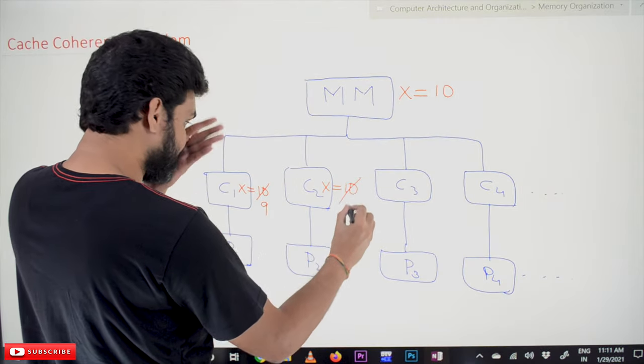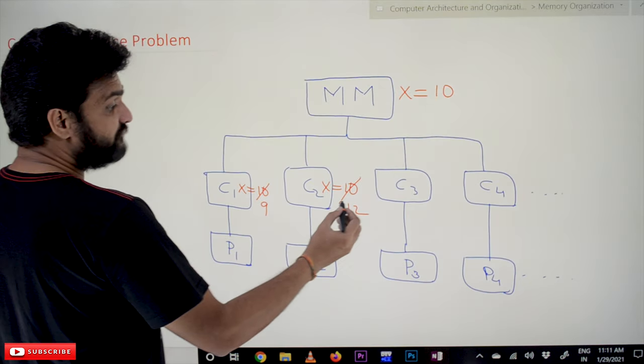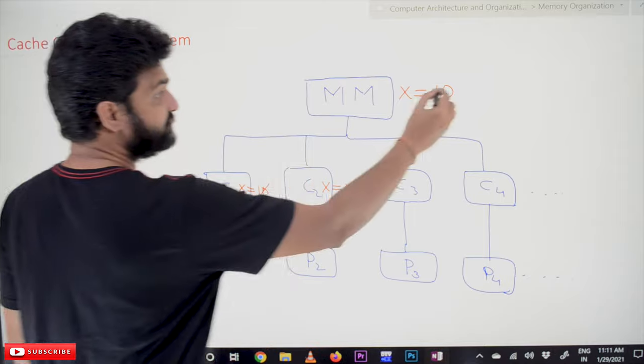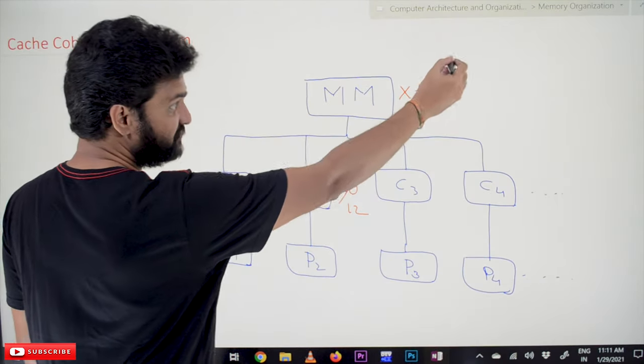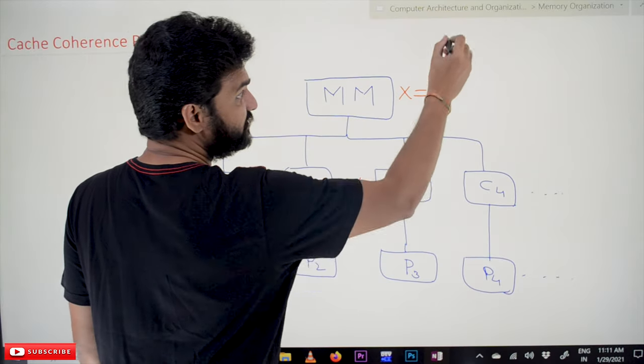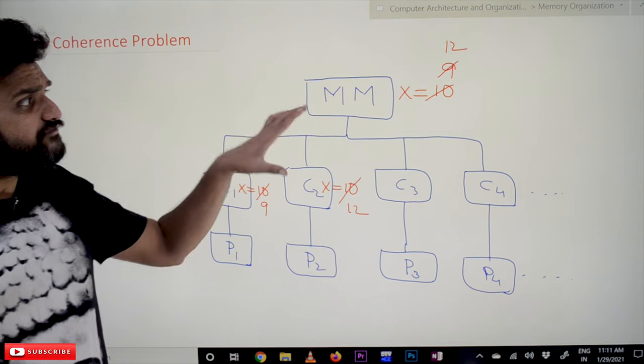So now this has been incremented two times, it is going to be 12. Now after some time, this will get updated. It has been updated to 9, and after that, this has been updated to 12.